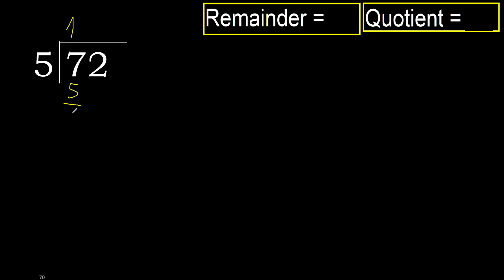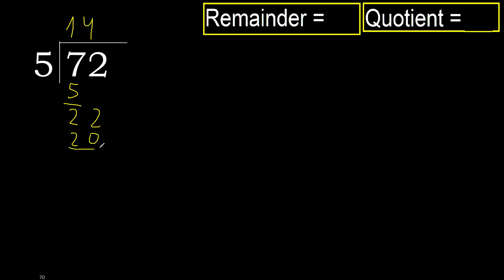Subtract, remainder 2. Next: 22. 5 multiplied by 5 is 25, 25 is greater. Multiply by 4: 20, 20 is not greater. Subtract. Next.